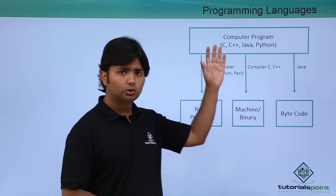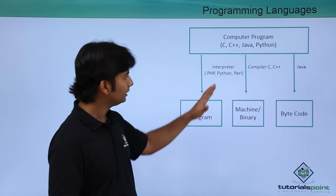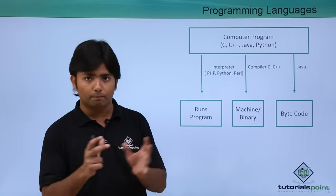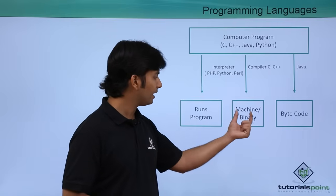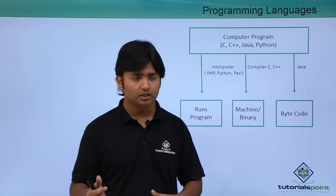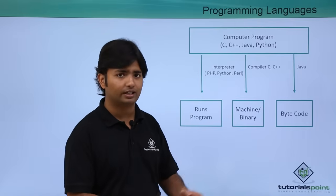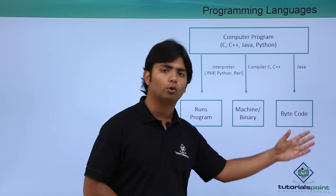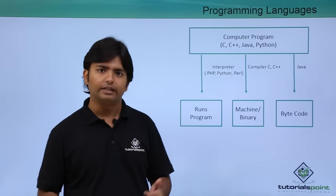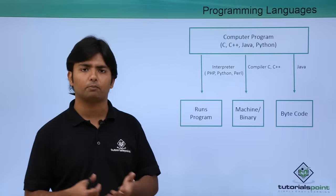When you use an interpreter, along with the translation it will keep on executing the code. But with a compiler, first it will compile the complete code and save the compiled result in a separate file carrying the machine or binary language, in the case of C or C++. If it is about Java, the compiler will compile the complete code and save it in a class file carrying the byte code. Similarly, for .NET, after compilation you will be getting the MSIL — that is Microsoft Intermediate Language.